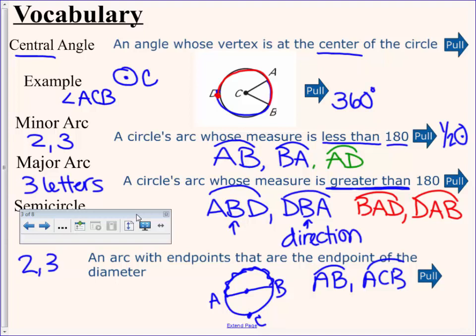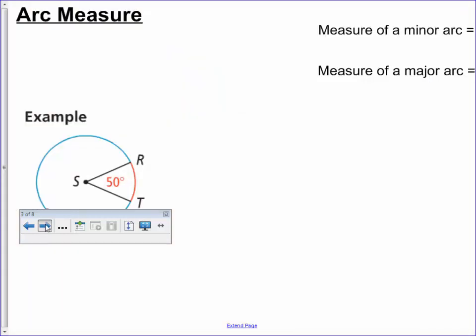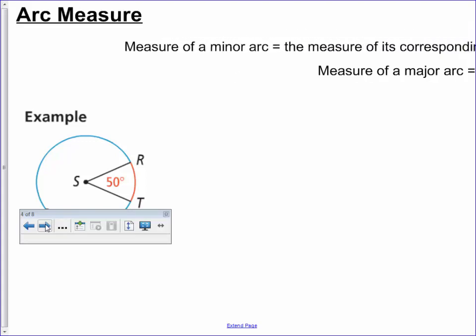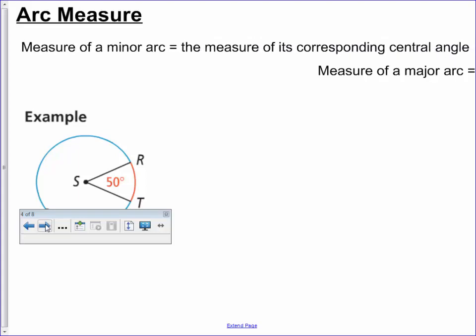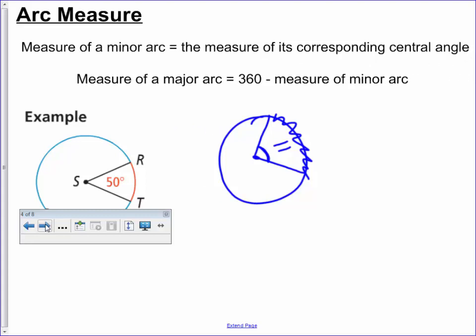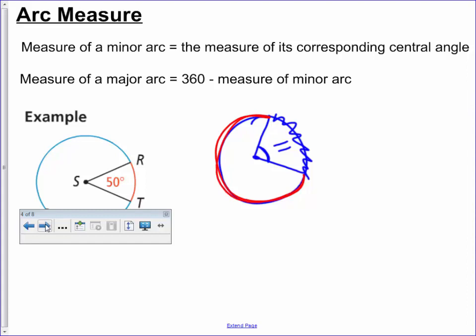Let's talk about central angles and the relationship between a central angle and its arc. The measure of a minor arc is equal to the measure of its corresponding central angle. So we have a central angle - this angle degree is equal to the arc it opens up to. The measure of the major arc going around the other way is 360 minus the minor arc.